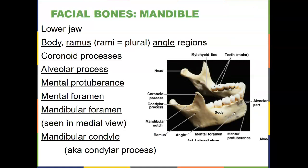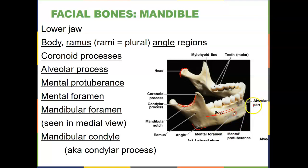The mandible — the lower jaw — is made up of the body, the ramus, and the angle region. The body is most of this region. We have the head as part of the articulation process, the mandibular arch (an inverted arch), the ramus where connective tissue attaches muscles, and the angle. The mental foramen is another small hole through which nerves can escape. The mental protuberance is basically your chin. The mylohyoid line is also visible. You'll need to recognize these bone markings for their connections to muscles.